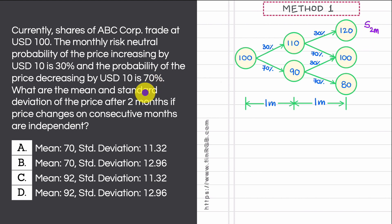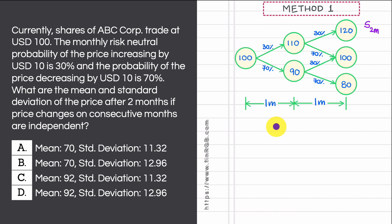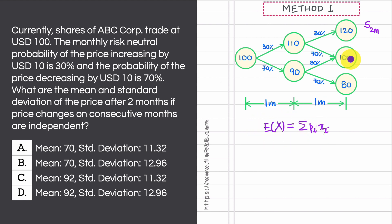The task is to find the mean or expected value of this random variable, and also the standard deviation, which is the square root of the variance. The first method uses the standard formulas — the same approach used in the GARP sample paper solution. For any random variable X, its expected value E[X] equals the probability-weighted average of all possible values that X is allowed to take.